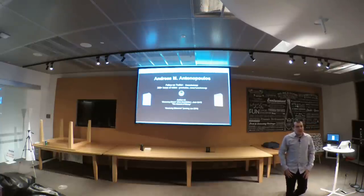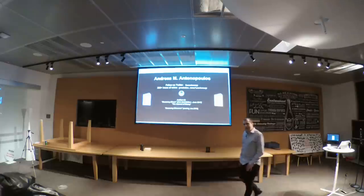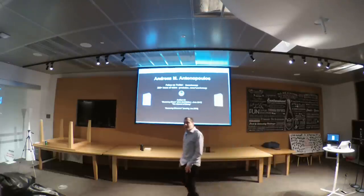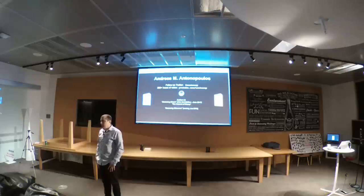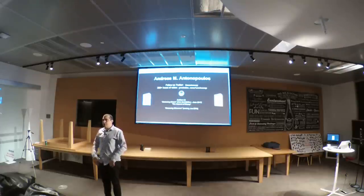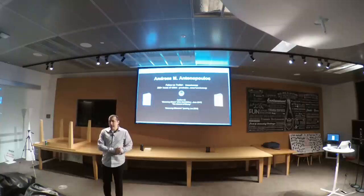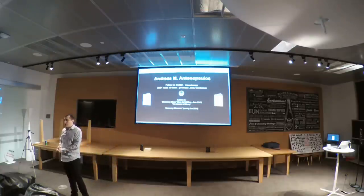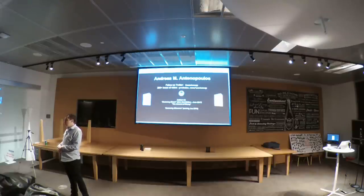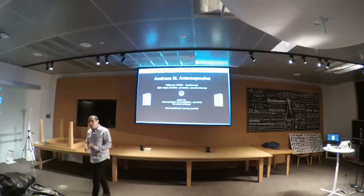I am going to take you on a little journey where we will talk about this and explain what these things are. A fork is a condition that occurs in an open blockchain whereby the state of the blockchain diverges into two states, whereby part of the network has a different perspective on the history of transactions than another part of the network. That is the basic definition of a fork — a divergence in perspective of the state of the blockchain.